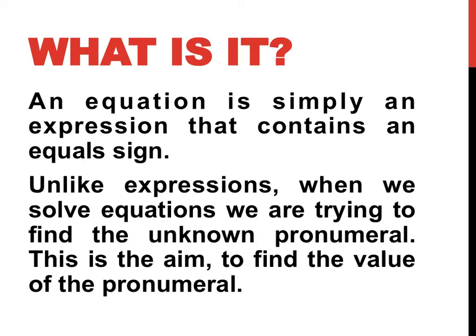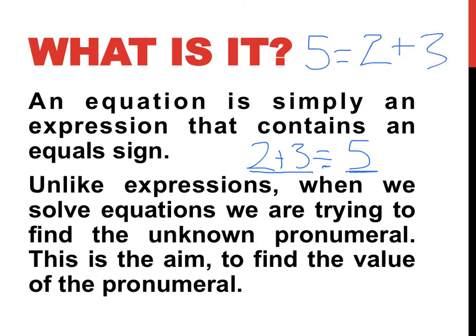That equal sign in the middle says everything on my left is equal to everything on my right. An example of an equation that isn't algebraic — so doesn't involve pronumerals — is saying two plus three equals five. That's a simple equation. I could also write five equals two plus three. It's not a big deal; it still says the same thing. Two plus three equals five, and five equals two plus three — they're both the same thing.